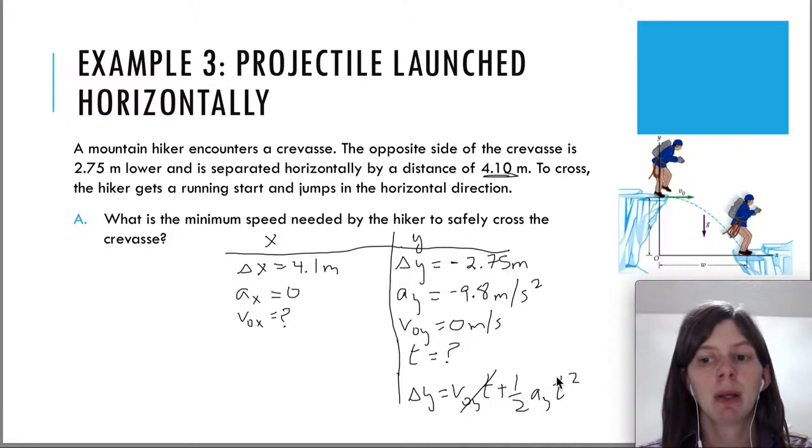And now we can solve for time. We have to multiply both sides by 2 to get rid of the one half. And then we have to divide by ay. And that gives us t squared. And then to get rid of the square, we take the square root. You can see that t equals the square root of 2 times delta y over ay. So we're going to go ahead and plug in the negative 2.75 for delta y and the negative 9.8 for ay. The negatives cancel out. So we're good. We're not having to take the square root of a negative number. And what we're going to get for this time is 0.75 seconds.